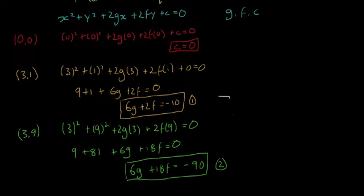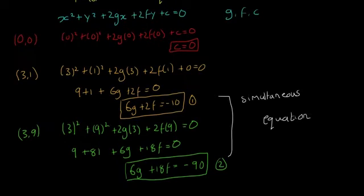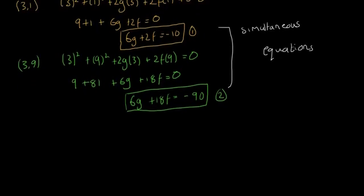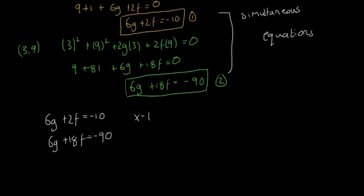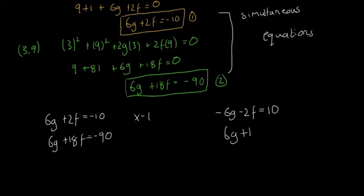Now we use these two equations and solve them as simultaneous equations. We have 6g + 2f = −10 and 6g + 18f = −90. Since both have 6g, we multiply the top equation by −1 to get −6g − 2f = 10, then add it to the second equation: 6g + 18f = −90.